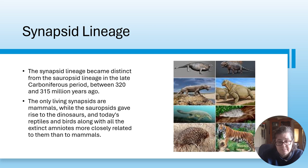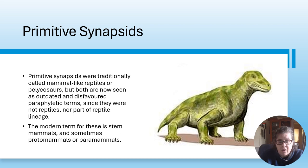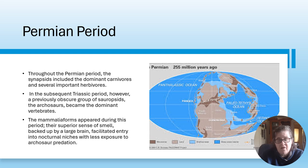Primitive synapsids were traditionally called mammal-like reptiles or pelycosaurs, but both are now seen as outdated, disfavored, paraphyletic terms since they were not reptiles nor part of the reptile lineage. The modern terms for these are stem mammals, and sometimes proto-mammals or para-mammals.